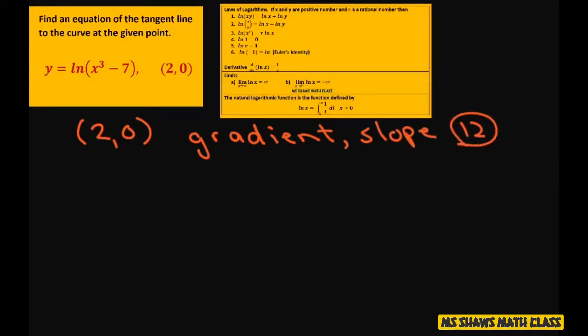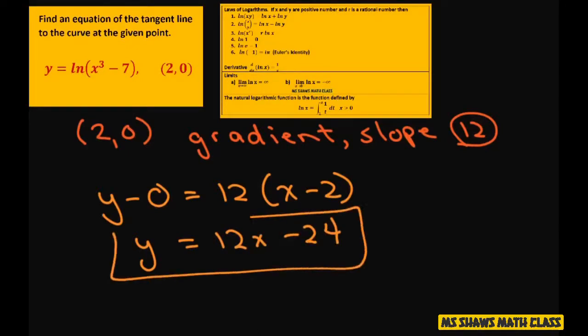So we're going to do y minus 0 equals 12 times x minus 2. So you get y equals 12x minus 24. And that is your equation of the tangent line to the curve at point 2 comma 0.